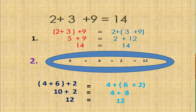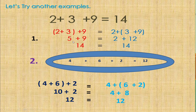I have here another example. Try natin tingnan paano ba natin ito gagawin. We have 2 plus 3 plus 9. So we group first 2 plus 3: 2 plus 3 is equal to 5. Then we add 9: 5 plus 9 is equal to 14. Or we can group 3 and 9 first: the sum of 3 and 9 is 12, then we add 2. So 2 plus 12 is equal to 14.